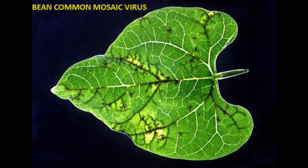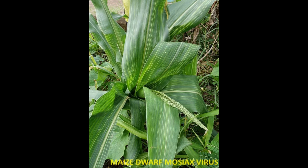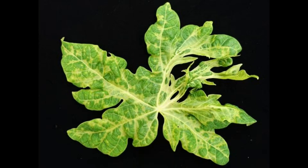Deformed growth involves abnormal growth patterns, including twisting, cupping, or other deformities in leaves, stems, or flowers. These viral infections also result in reduced yield.